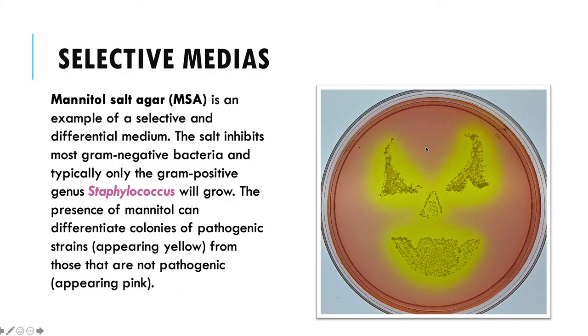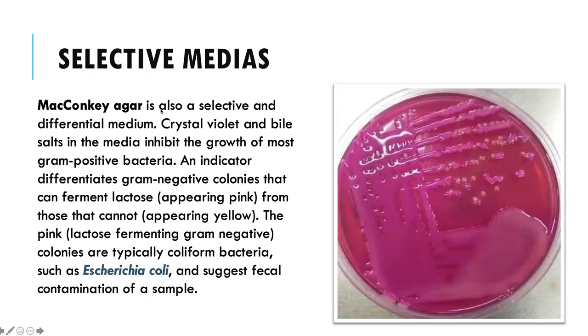So we have different types of selective media. Basically what selective media is, is it inhibits the growth of other bacteria and allows only certain bacteria to grow. So if we have mannitol salt agar, for example, you're going to experience staphylococcus growth only if you have any growth on the plate at all.